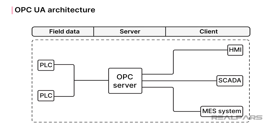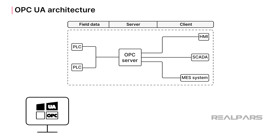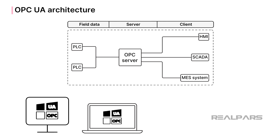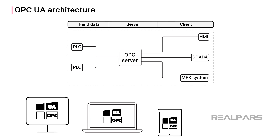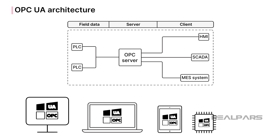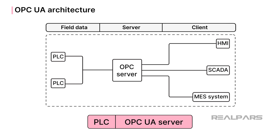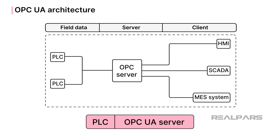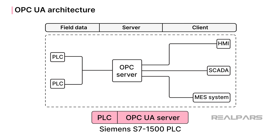OPC UA can run on desktops, laptops, tablets, microcontrollers, and even in the cloud. Some manufacturers have embedded OPC UA servers directly into their PLC hardware. An example is the Siemens S7-1500 PLC.